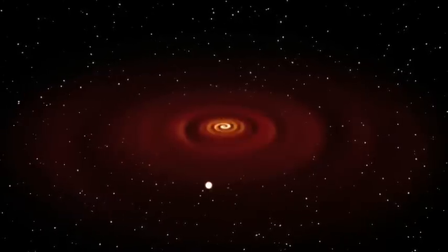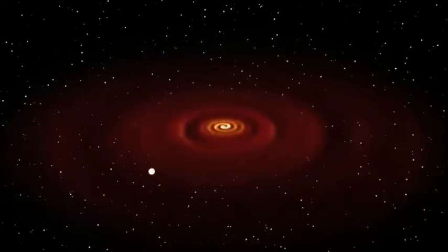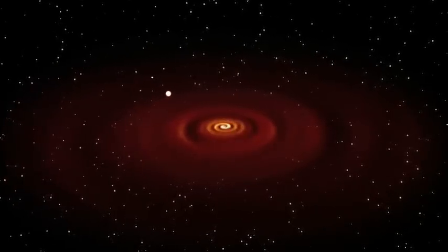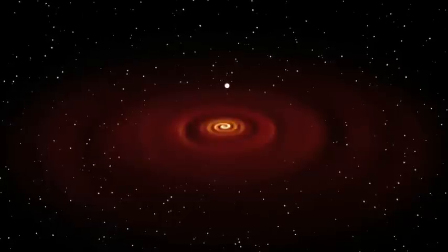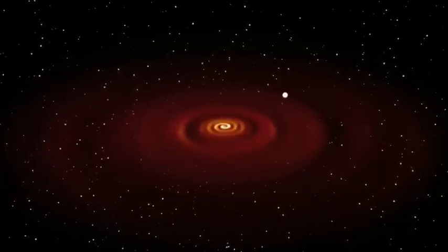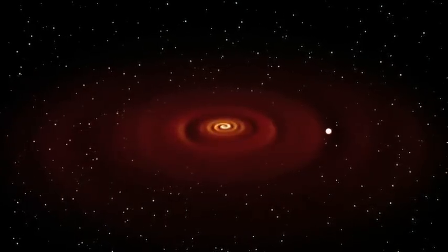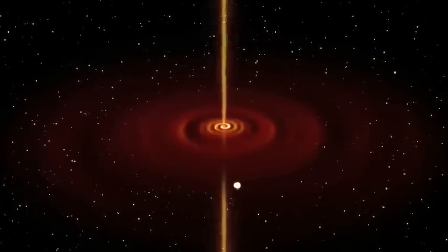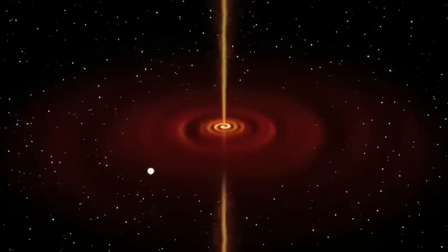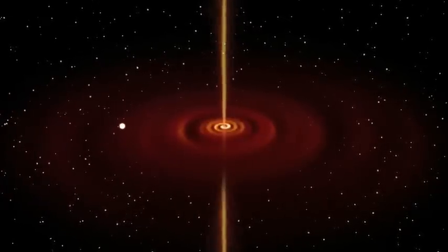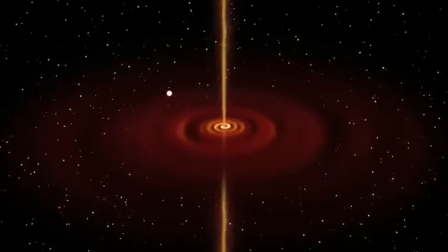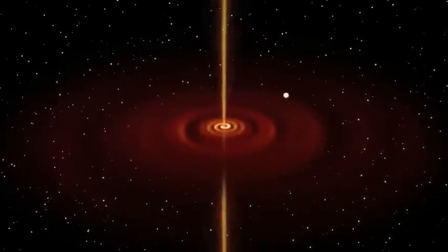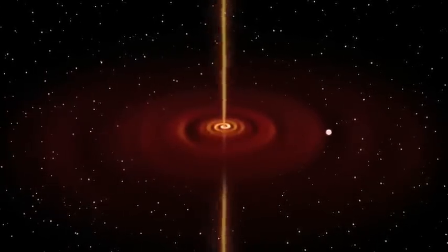This black hole is drawing matter from a companion star, which orbits it at a distance safely outside the Event Horizon. As the gas spirals into the black hole, it heats up and emits huge quantities of high energy radiation. Intense radiation emerging from a small area, or stars orbiting small invisible companions. These are telltale calling cards of a black hole.